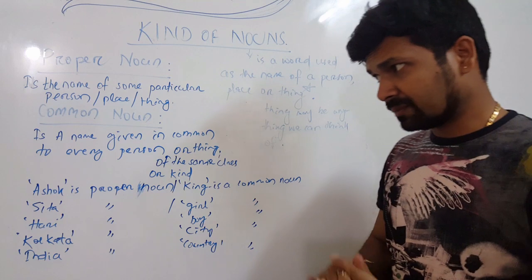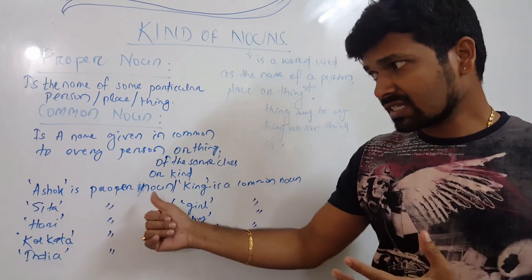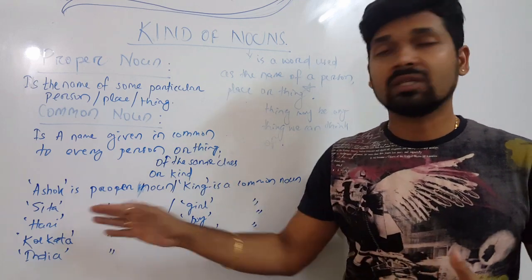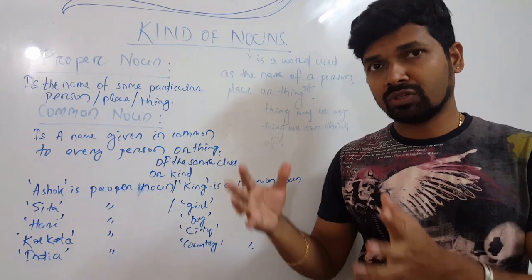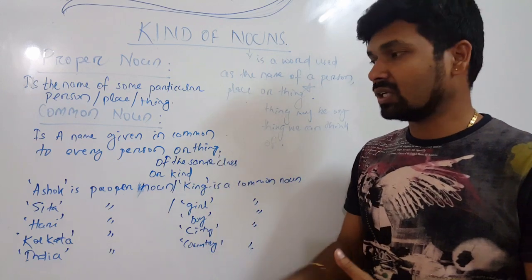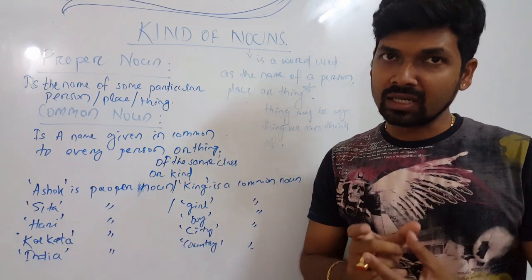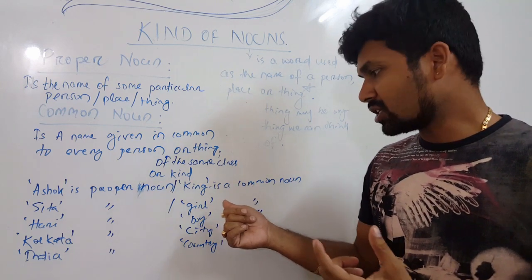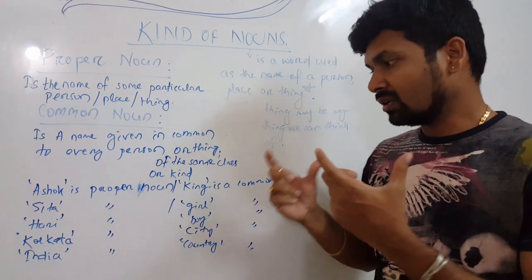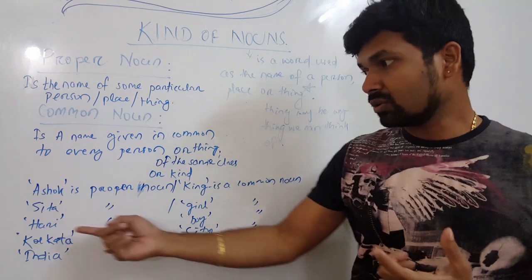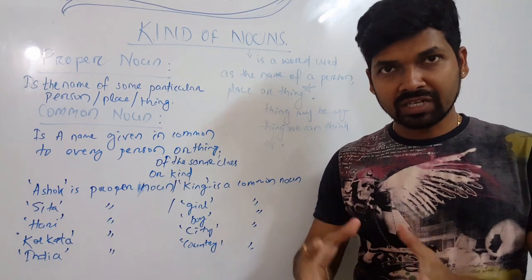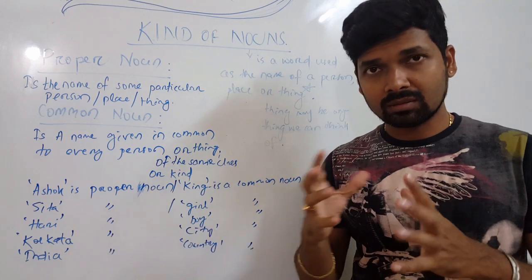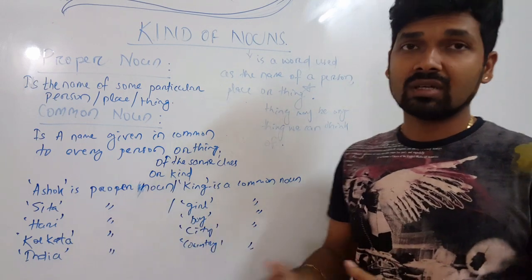Let's see some more examples. Asoka is a proper noun and king is a common noun. Next: Sita is a very beautiful and intelligent girl. Here, Sita is a proper noun because it is a particular name. Girl is a common noun. Similarly, Hari is a very tough boy — Hari is a proper noun, boy is a common noun.